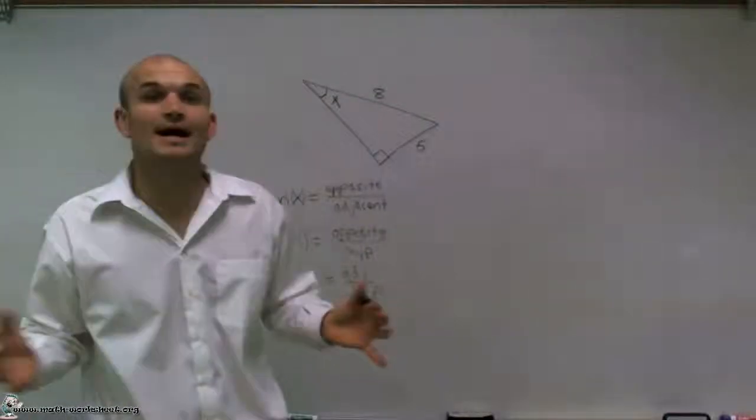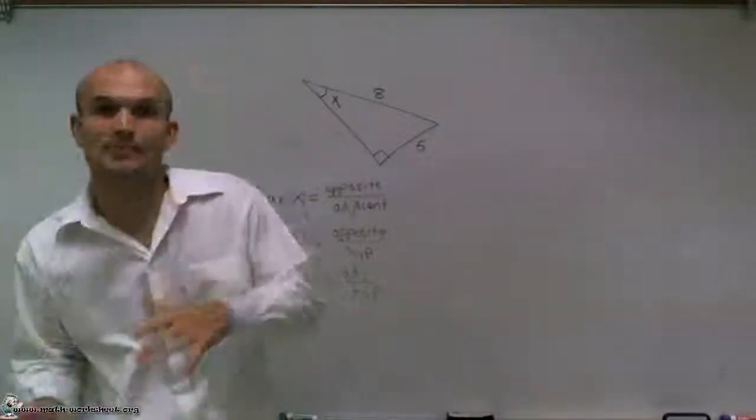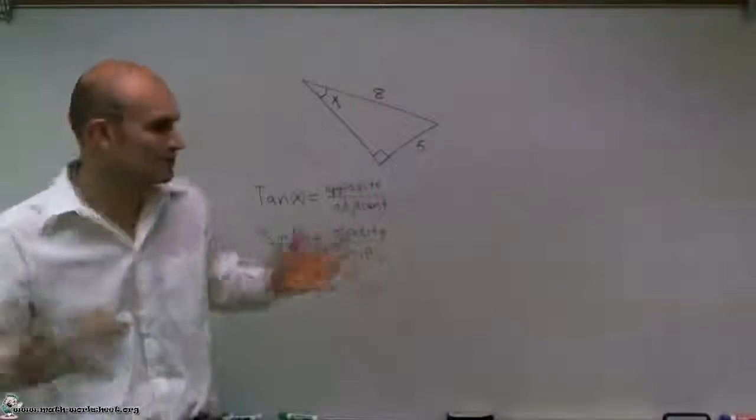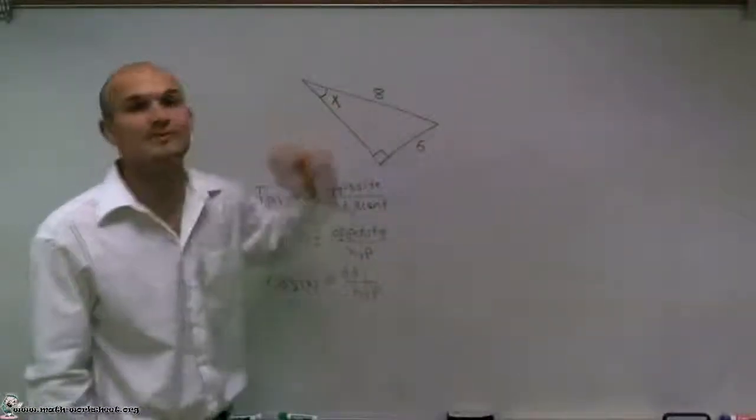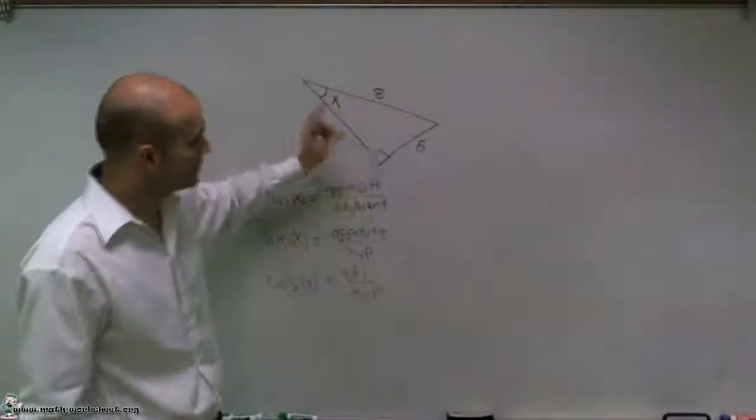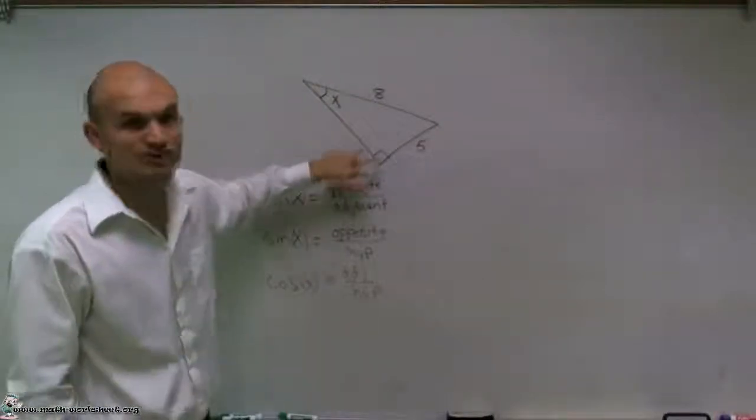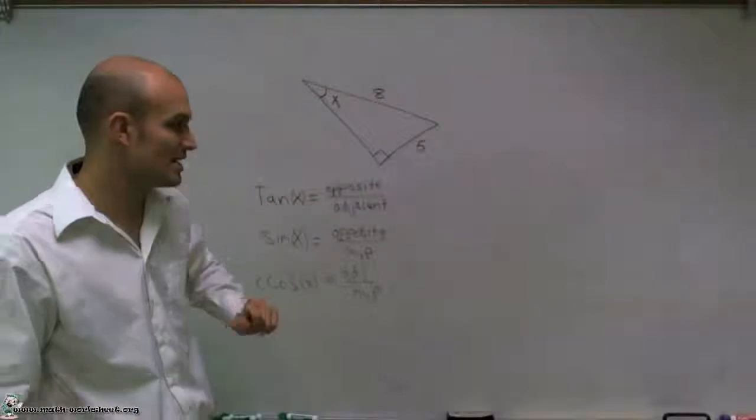So it doesn't matter what I do to my triangle. I can flip it, reflect it, do anything I want to it. My hypotenuse is always going to be my longest leg or longest length of my triangle, and it's also going to be directly across from my 90-degree angle.